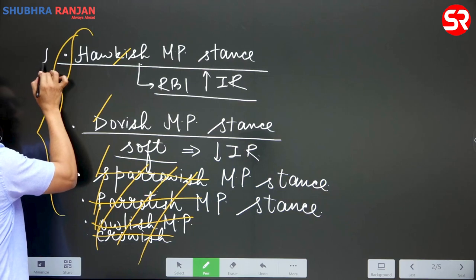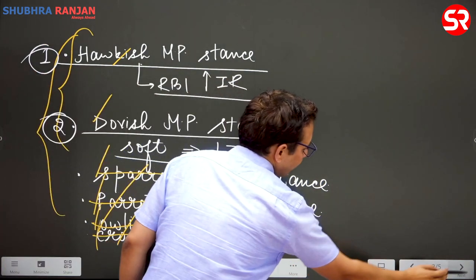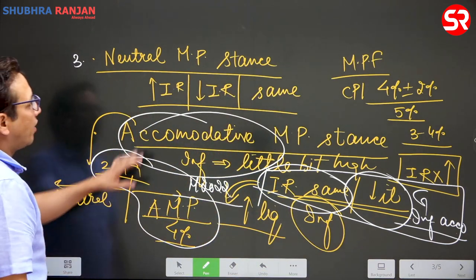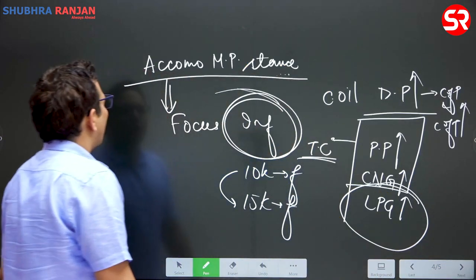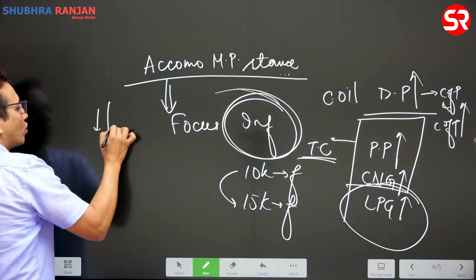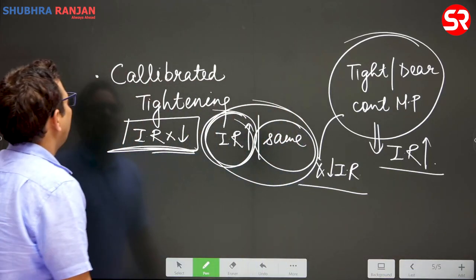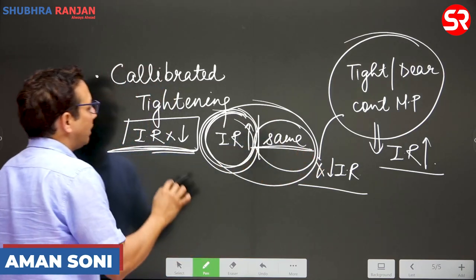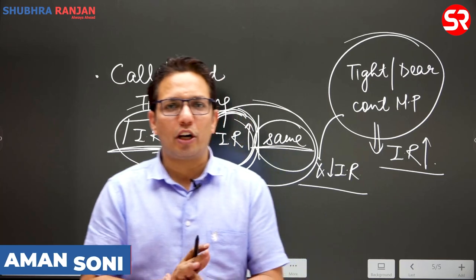To summarize, the monetary policy stances are: first, hawkish — interest rates increase; second, dovish — interest rates reduce; third, neutral — interest rates may increase, reduce, or remain same; fourth, accommodative — interest rates either reduce or remain same, not increased; and fifth, calibrated tightening — interest rates either increase or remain same, but will not be reduced. That completes the discussion on monetary policy stances.